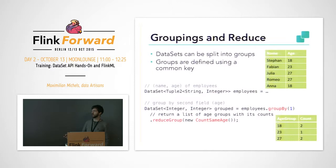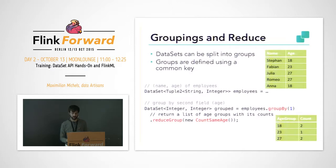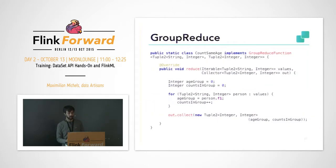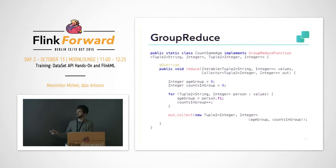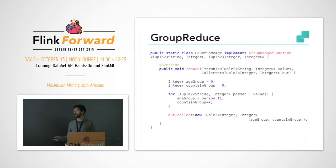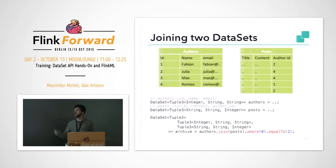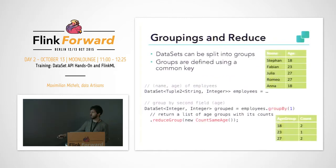You implement the reduce function and receive all the people in the same age group. You increase the count for every age group and output the age group and the number of people in the group. Here is the result — as expected, you see the output.